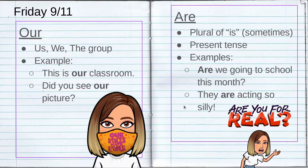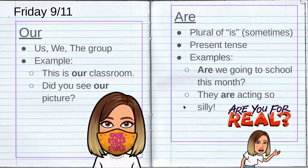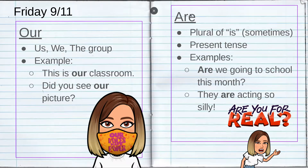Our second example: 'They are acting so silly.' So right now, they — remember, the group of people — they are, A-R-E, acting so silly. So we've got 'our,' which some people pronounce as 'are,' and 'are' as a plural form of 'is.'